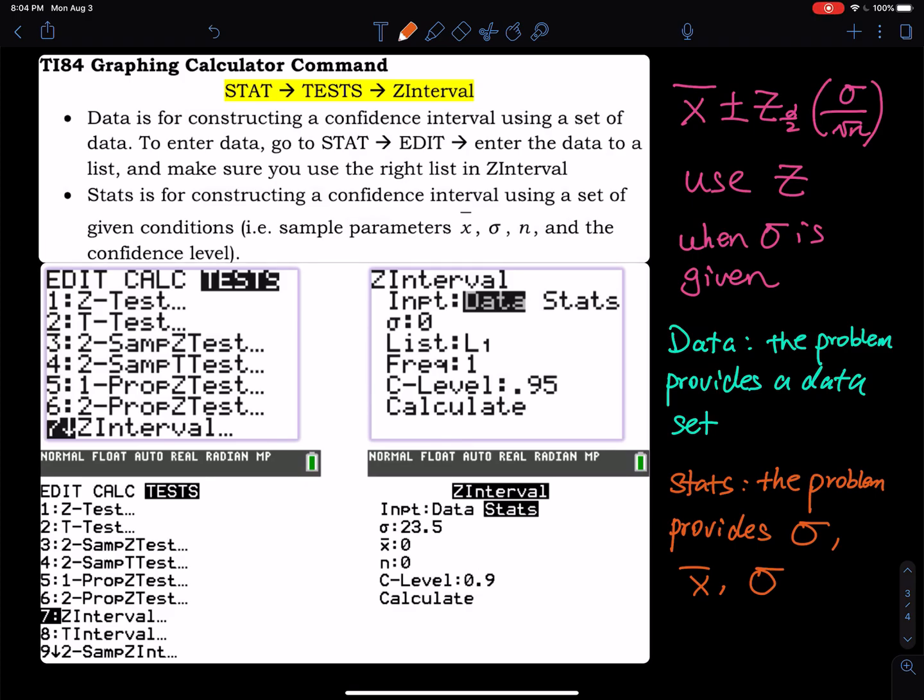In this video, I will show you how to use your TI-83 or TI-84 graphing calculator to compute a confidence interval using the z procedure.